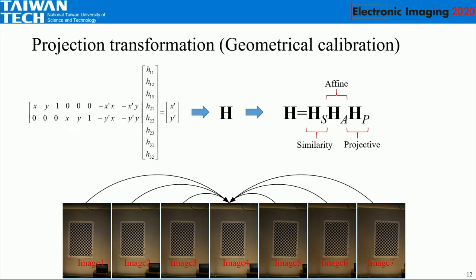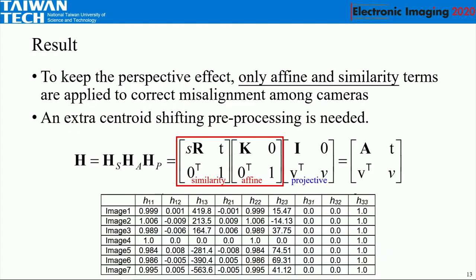After we determine the homography between image one and image four, we can directly convert the image to align with image four. However, we want to preserve a good perspective effect, so we need to decompose the homography. The homography can be decomposed into three parts: a similarity transformation, an affine transformation, and a projective transformation. In our application, we only use two terms — similarity and affine mapping. The similarity term handles rotation or field-of-view changes; we use the matrix to compensate for the error.